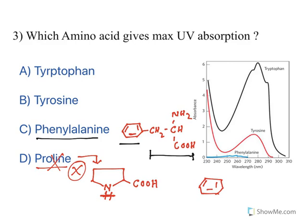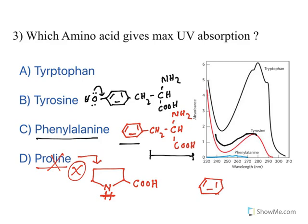Getting to the next one: tyrosine. In phenylalanine, if you attach a 4-hydroxy group, it becomes tyrosine. In tyrosine, the hydroxy group's oxygen has a lone pair of electrons. These electrons participate in resonance structures. The moment resonance is present, looking at the curve for tyrosine, there is increased absorption and the wavelength is also at higher nanometers, because resonance increases both absorption and wavelength. Compared to phenylalanine, tyrosine has greater UV absorption.